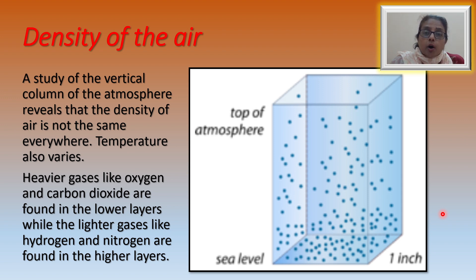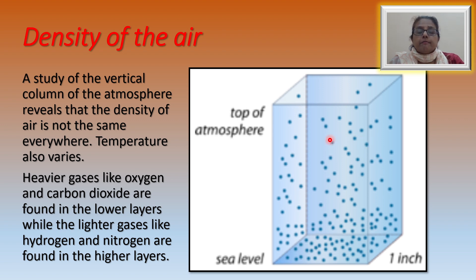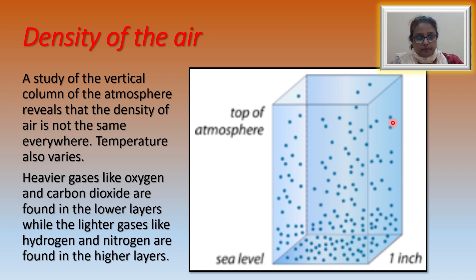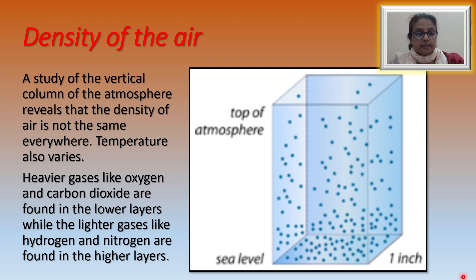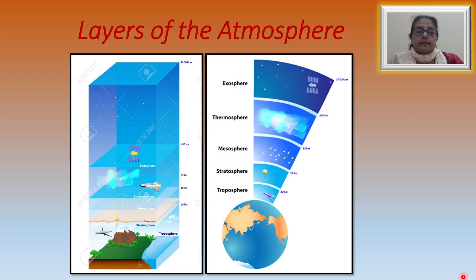Heavier gases like oxygen and carbon dioxide are found in the lower layers, while lighter gases like hydrogen and nitrogen are found in the higher layers. The density of air rapidly decreases as one moves towards the upper part of the atmosphere. On the basis of changes in temperature with increase in height and structure, the atmosphere has been divided into five concentric layers.